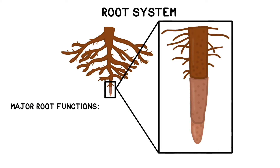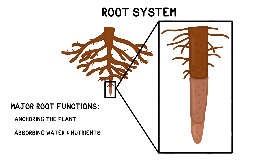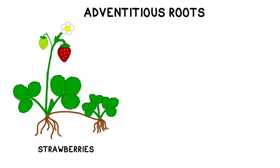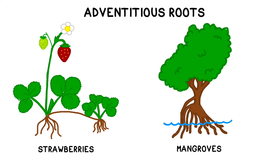The roots have three major functions: anchoring the plant to the soil, absorbing water and minerals and transporting them upwards to the rest of the plant, and storing the products of photosynthesis. Some types of roots can also perform gas exchange, and a few types of plants have adventitious roots, which are at least partially above ground.